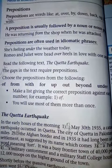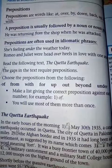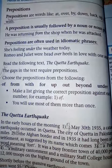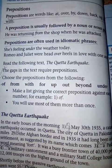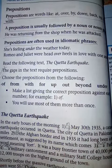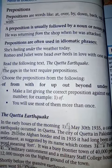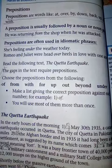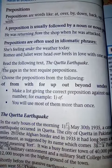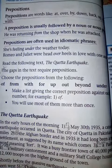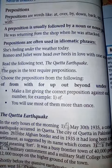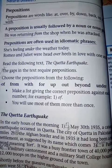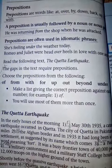For example, the first idiomatic phrase: 'The market is feeling under the weather today.' Here the preposition used is 'under.' Another example: 'Romeo and Juliet were head over heels in love with one another.' In this sentence, the prepositions 'over' and 'with' are used.